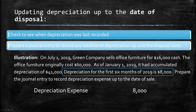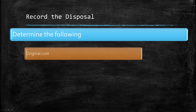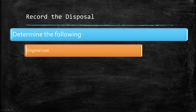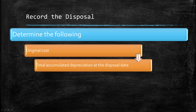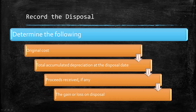We're going to debit depreciation expense and credit accumulated depreciation for that $8,000. Now that we've updated the depreciation, we can record the disposal of the asset. When recording the disposal, you need to determine the original cost of that asset, the total accumulated depreciation all the way up to that disposal date, the proceeds received if any, and then calculate the gain or loss on the disposal.